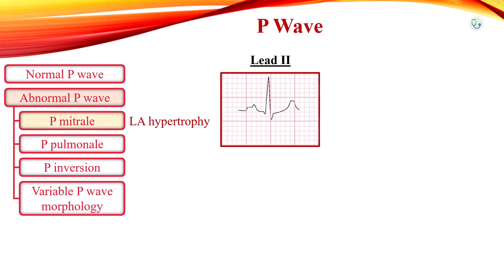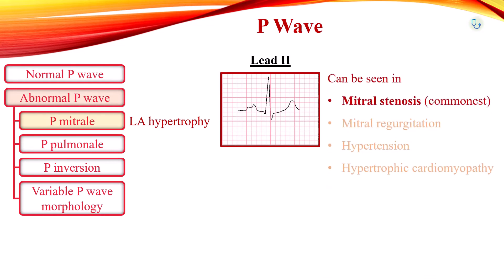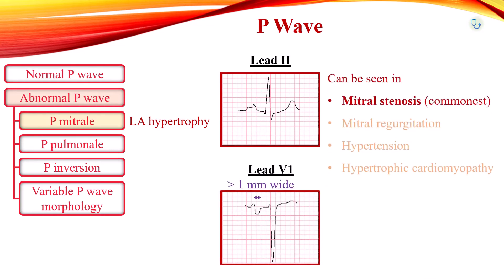Bifid P waves in lead 2 is a feature of left atrial hypertrophy or dilation, typically due to mitral stenosis. It is a significant risk factor for developing atrial fibrillation. In V1, left atrial hypertrophy causes widening — more than 1 mm wide — and deepening — more than 1 mm deep — of the negative portion of P wave.